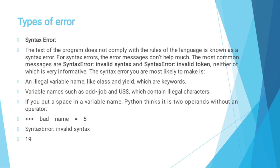The first one is syntax error. When the text of the program does not conform to the rules of the language, it is known as a syntax error. The error messages don't help much. The most common messages are 'SyntaxError: invalid syntax' and 'SyntaxError: invalid token', neither of which is very informative. The syntax errors you are most likely to make include using an illegal variable name like 'class' or 'yield', which are keywords.